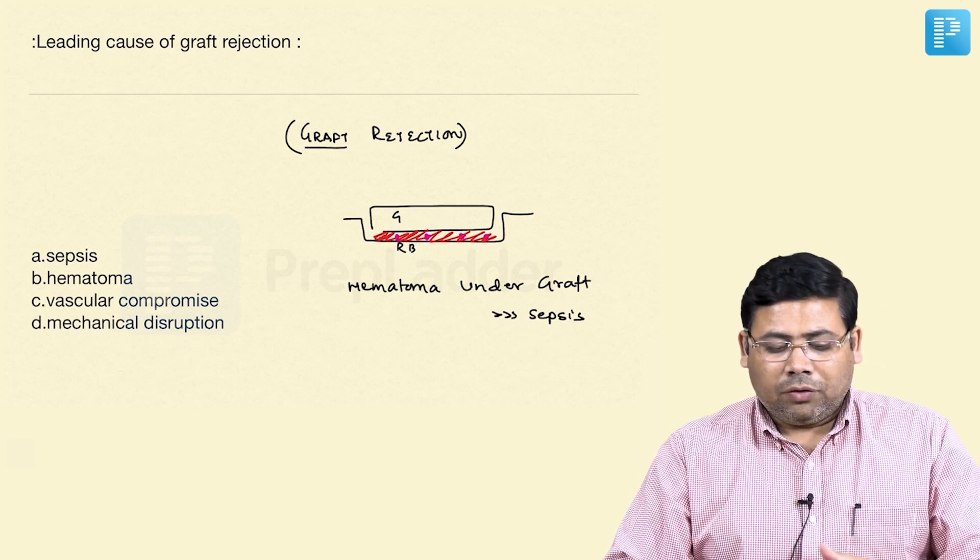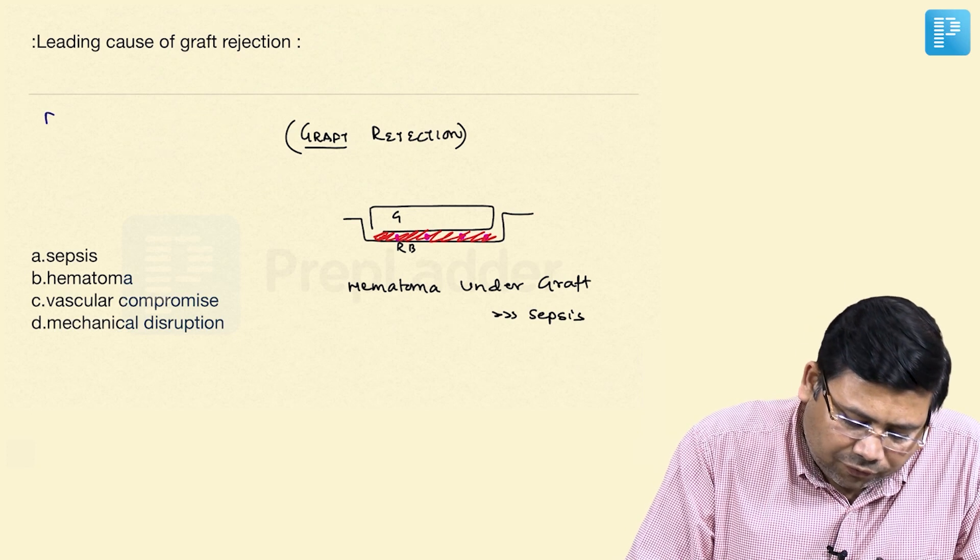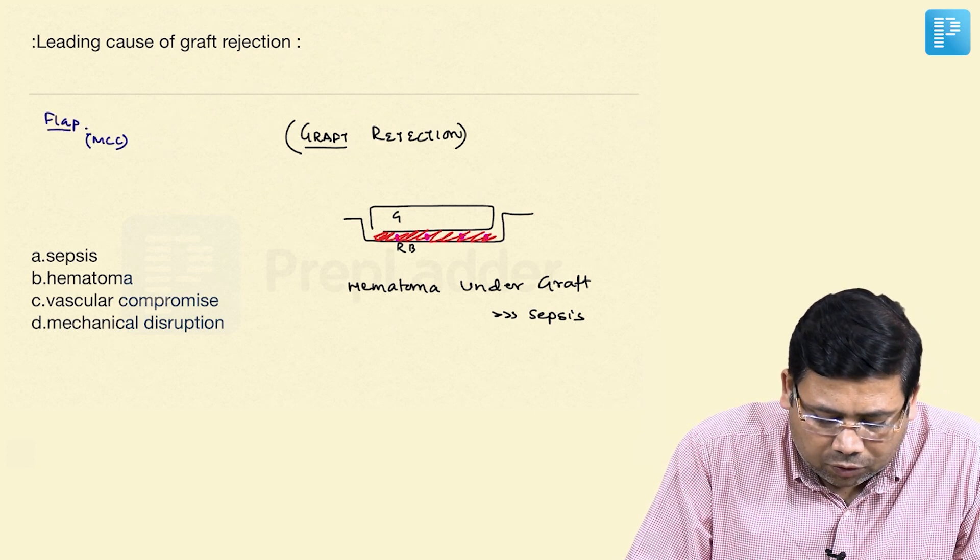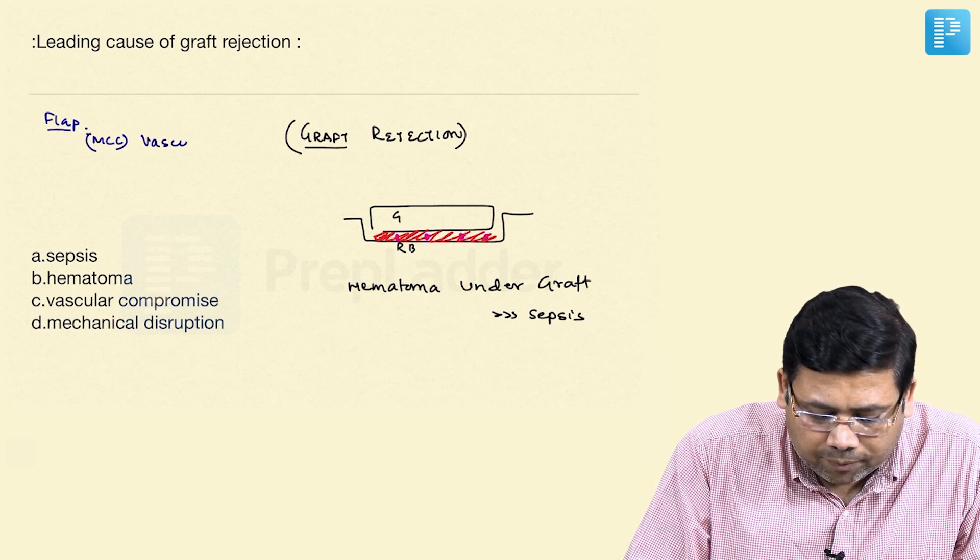The second is sepsis. Now, when we talk about flap rejection, you know flap, the most common cause is vascular compromise.